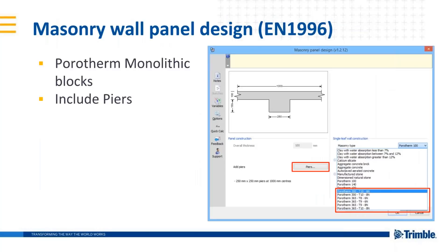In October we released an updated version of our Eurocode masonry wall panel design calculation, which included the option to design walls using Wienerberger's range of Porotherm monolithic blocks. The calculation also now includes the option to use piers when designing with Porotherm blocks.